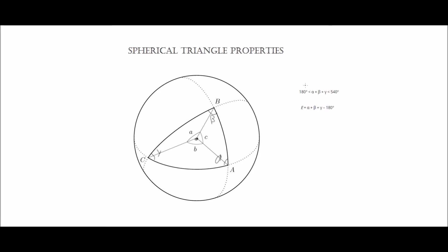Now let's discuss some basic properties of spherical triangles. Triangle ABC is a spherical triangle, and as we all know in Euclidean geometry, the interior angles of a normal triangle always add up to 180 degrees. For spherical triangles this is not so fixed — the sum of the interior angles alpha, beta, and gamma can in fact range between 180 degrees and 540 degrees, so each triangle can have a completely different sum of its interior angles.